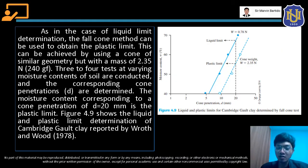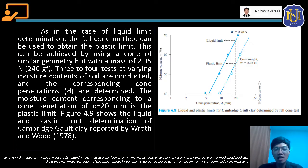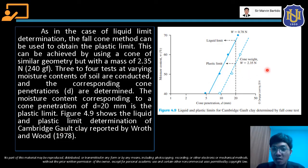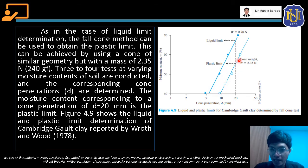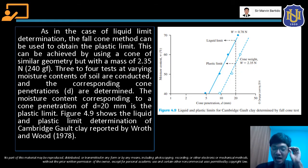Figure 4.9 shows the liquid and plastic limit determination of Cambridge gold clay reported by Roth and Wood. Yung ginamit na soil dito is Cambridge gold clay. Ito yung mga lumabas na resulta doon sa liquid limit test at saka plastic limit test using the fall cone method. Mapapansin mo yung liquid limit flow curve — yung mga data points sa liquid limit test na kinandak ni Roth at Wood. Tapos sa plastic limit test, yung mga points natin, yung flow curve natin para sa plastic limit — mga straight line yan yung flow curve para sa liquid limit and plastic limit. To obtain the liquid limit at saka plastic limit, same lang — kailangan 20 mm yung penetration.